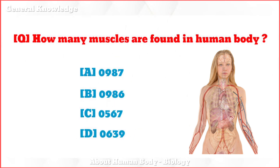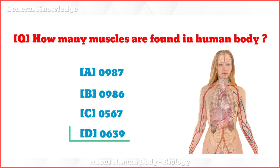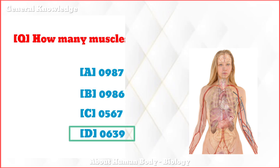How many types of teeth are present in the human body? The correct answer is option D: 4.